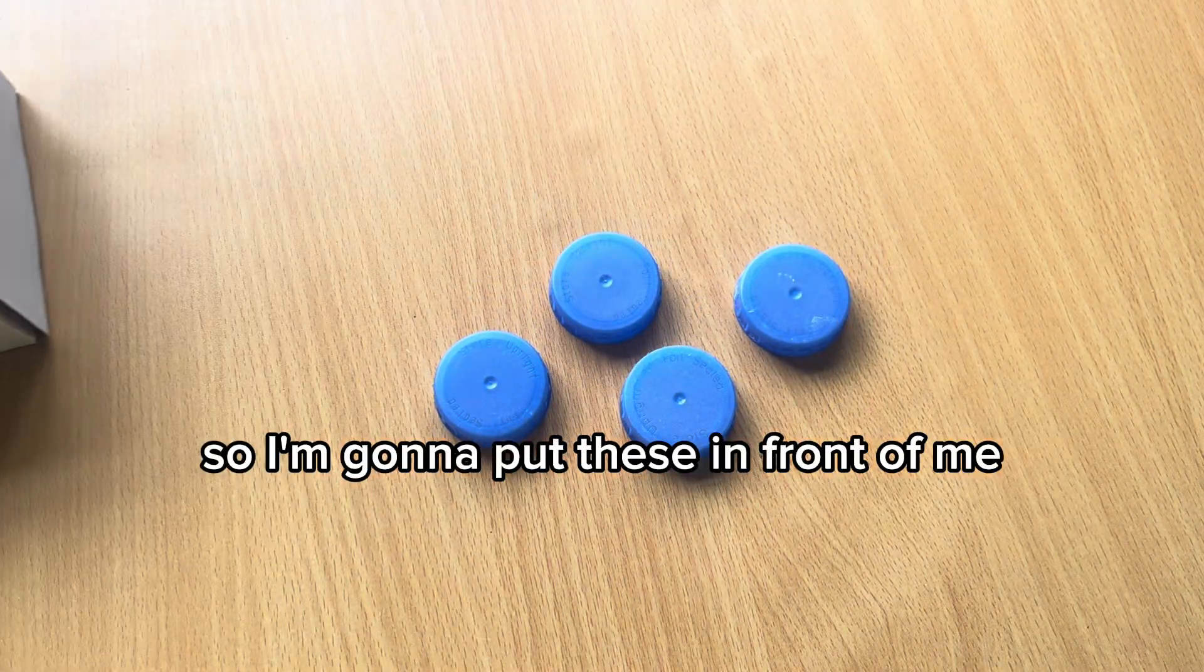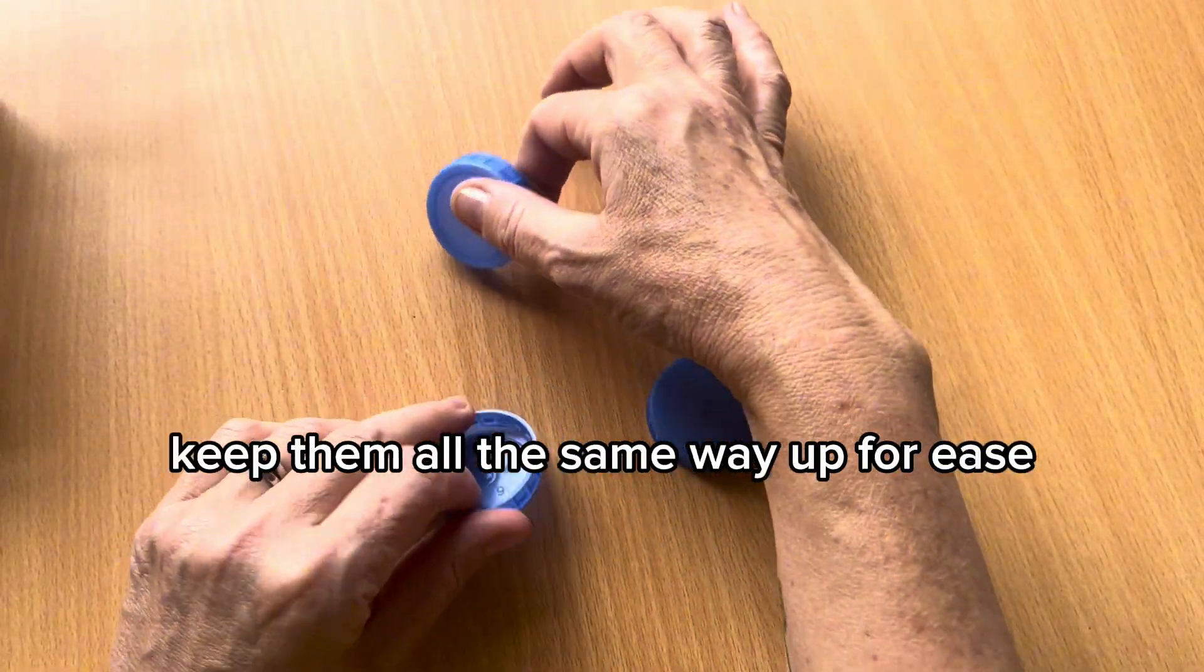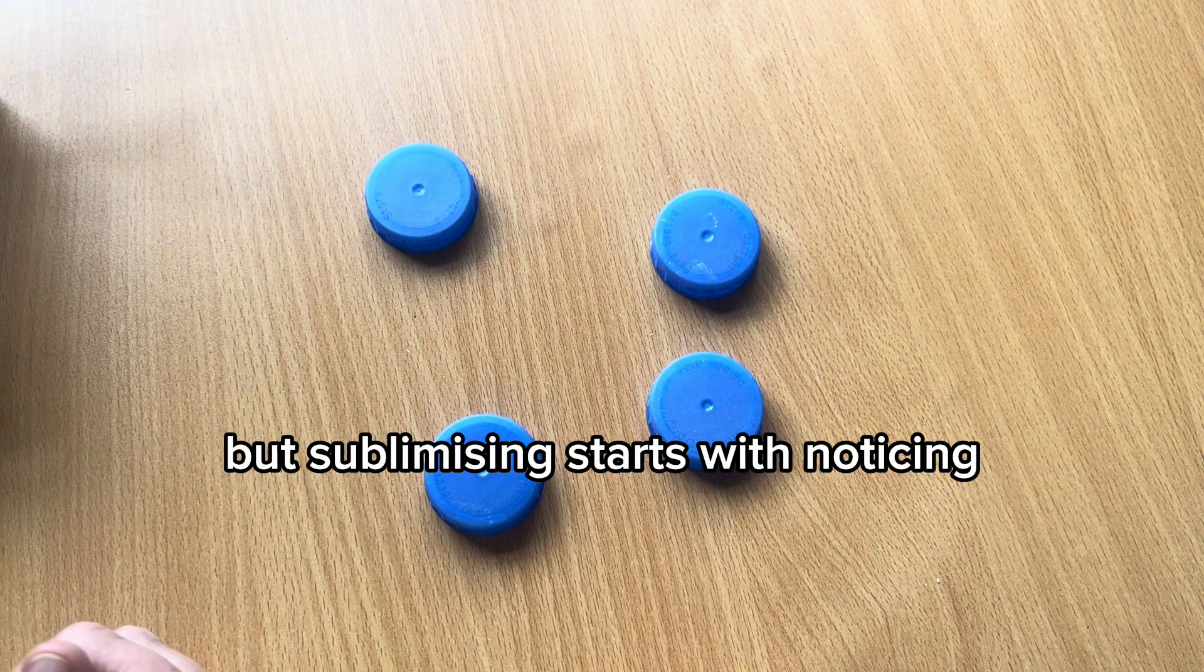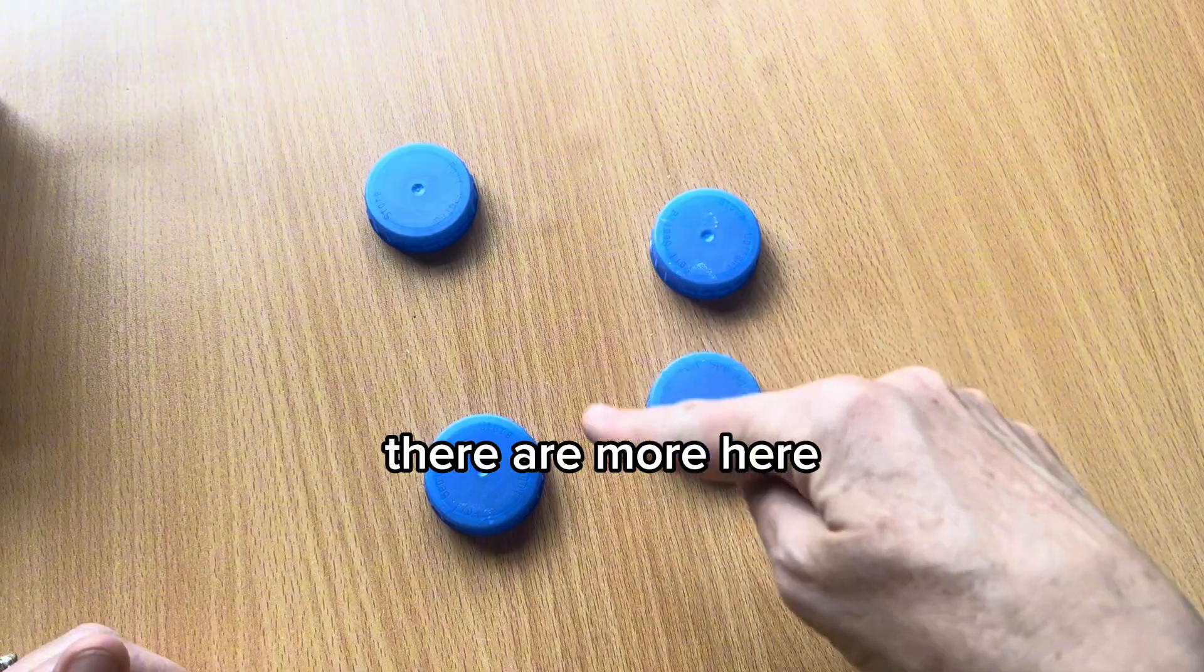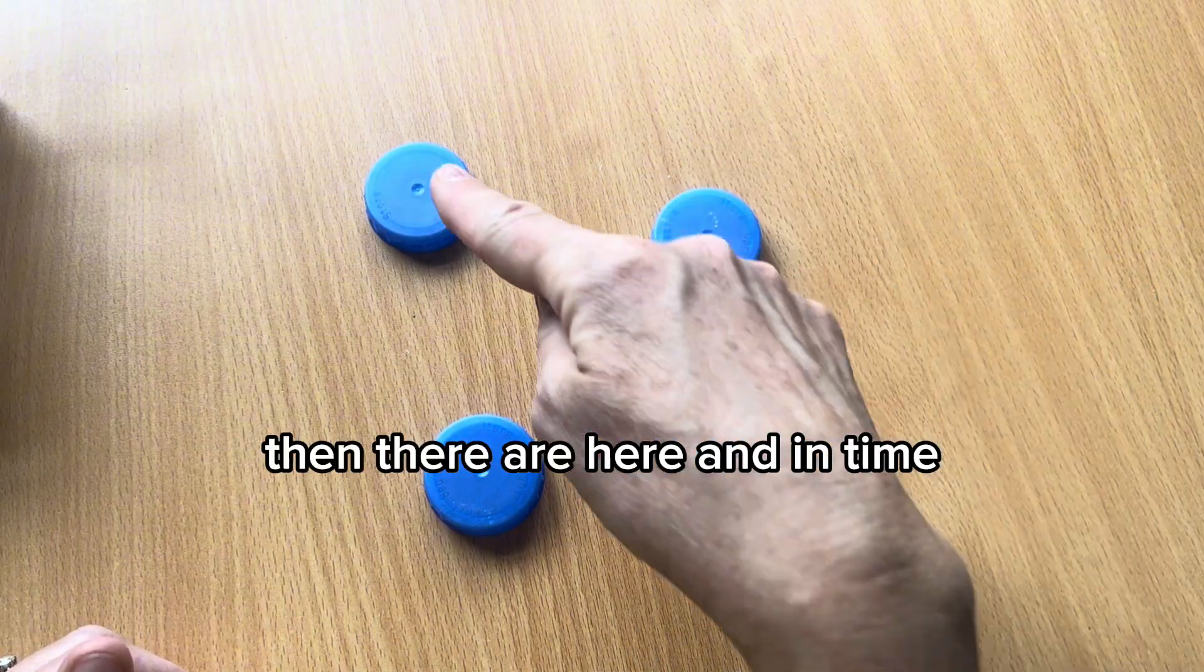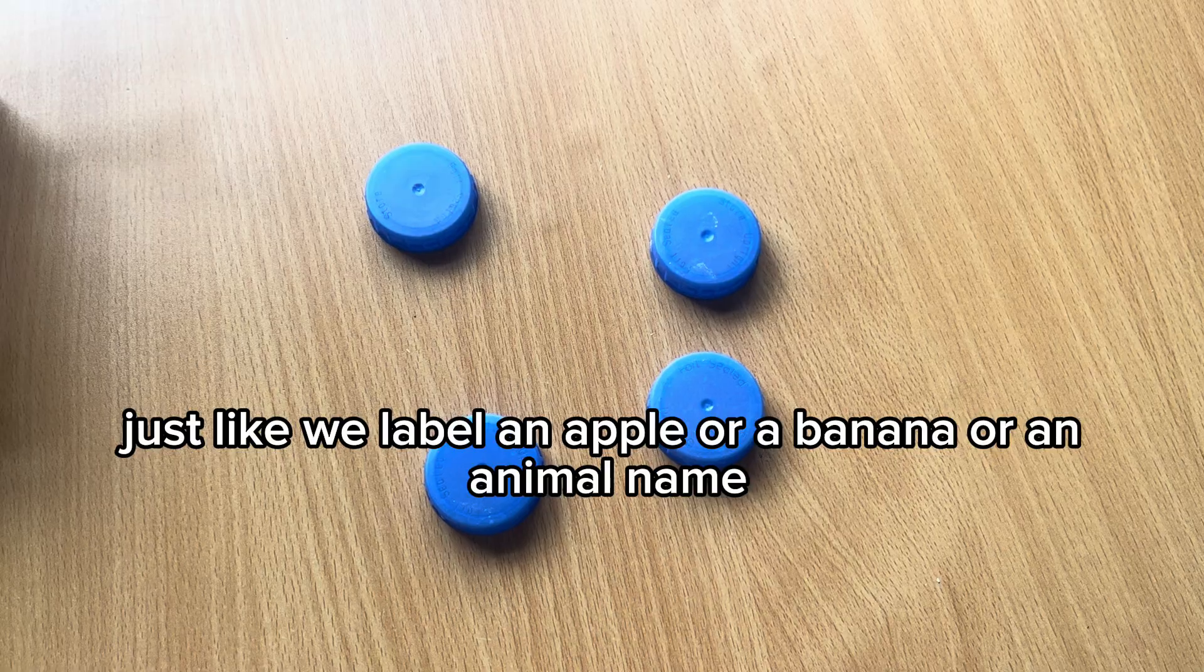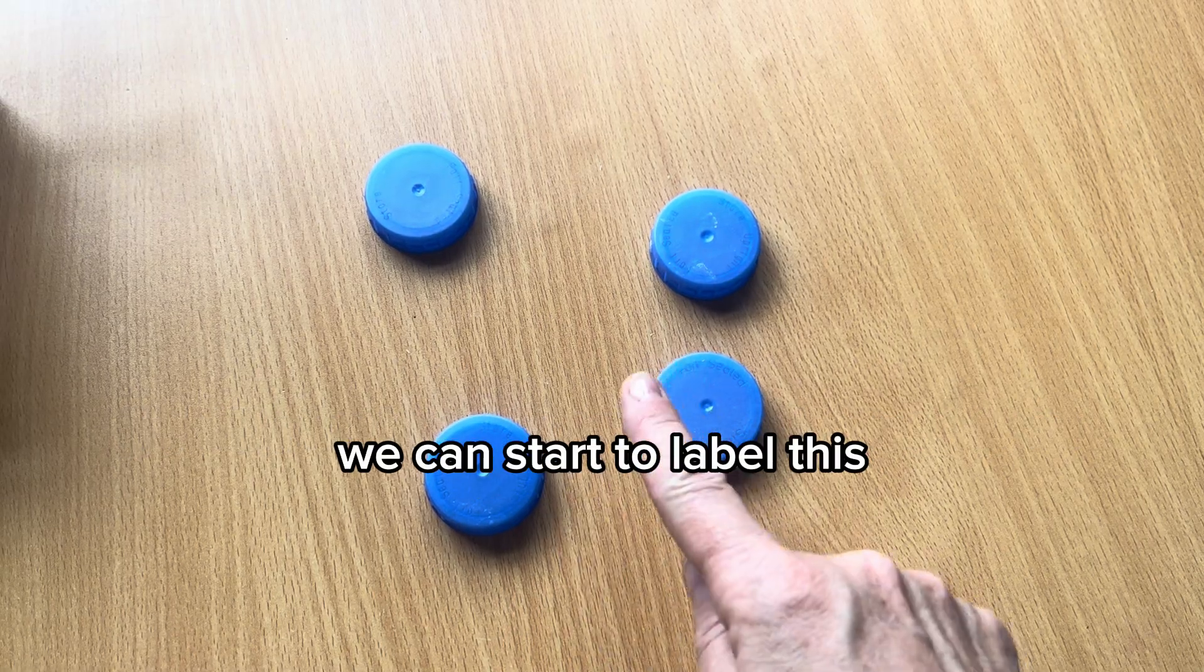So I'm going to put these in front of me. Could be in any arrangement, could even drop them down or keep them all the same way up for ease, but subitising starts with noticing. So we can notice, for example, there are more here than there are here. And in time, just like we label an apple or a banana or an animal name, we can start to label this.